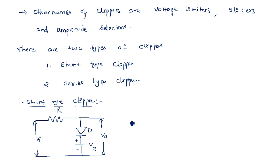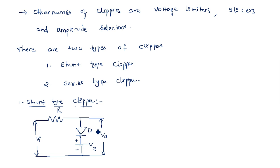How do we explain the operation of this shunt type clipper? Everything is compared with respect to the diode — whether it is in ON state or OFF state. If the diode is in ON state, it acts as a short circuit, and the output is equal to Vr. If the diode is in OFF state, it acts as an open circuit, and the output is equal to the input.